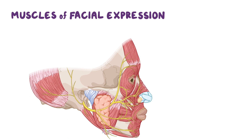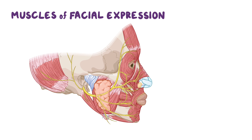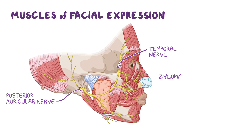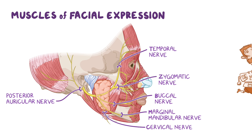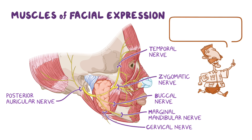All facial muscles are innervated by the branches of the facial nerve, which are the posterior auricular, temporal, zygomatic, buccal, marginal mandibular, and cervical nerves. A way to remember these last five branches that emerge from the parotid gland is by using the mnemonic: To Zanzibar By Motor Car.